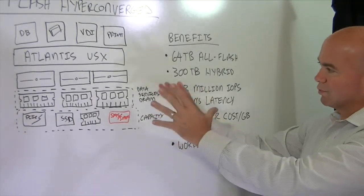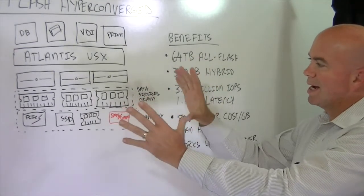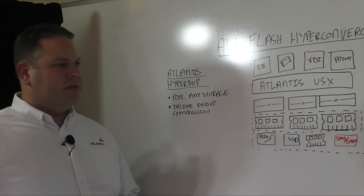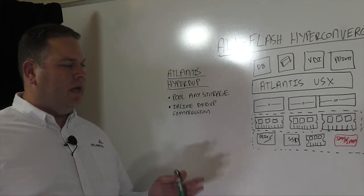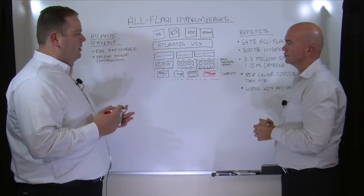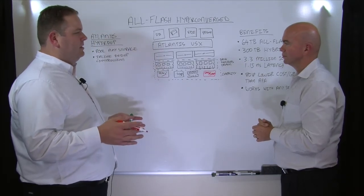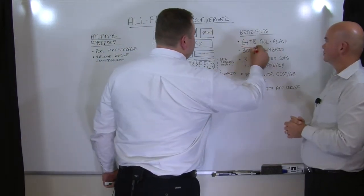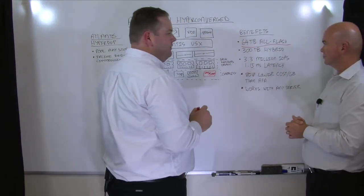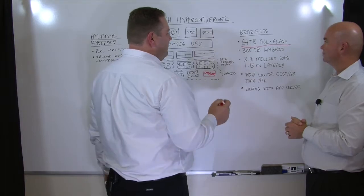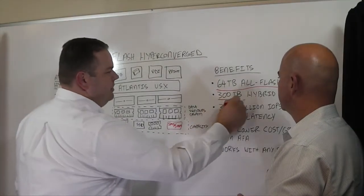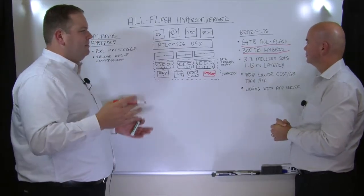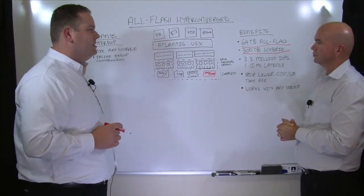Okay. So then let's talk about, from a total capacity, how much capacity can we put together in this type of world? So we have developed some solution briefs and done some testing around it. And a three-node configuration, which is kind of the minimum with Atlantis USX, can actually do these capacities over here. So you can very easily do 64 terabytes of effective all-flash capacity. If you need more capacity than that, you can actually increase it to 300 terabytes by adding two, four, six terabyte SAS drives in alongside some of the flash. Wow.